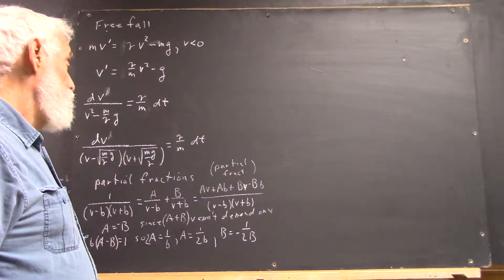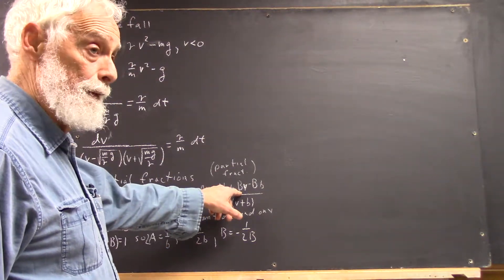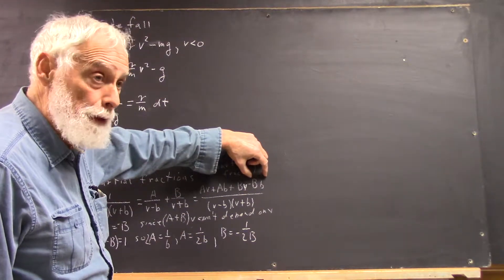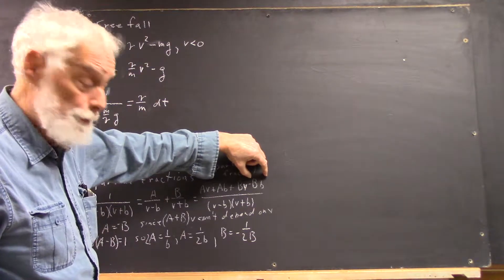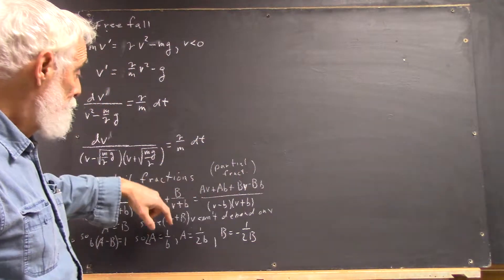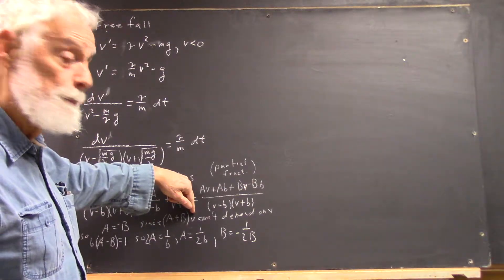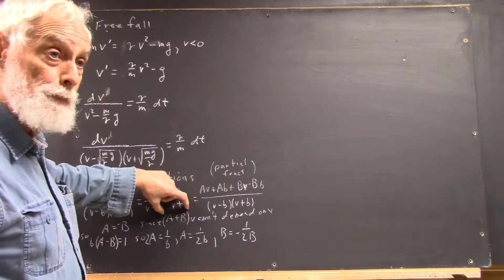Well, this means that A plus B times V, well, AB minus big B, little b, is just going to be some number. It's not going to be changing. However, V does change, so that A plus B times V will be changing unless A plus B is 0.